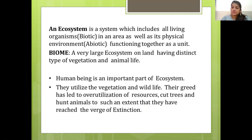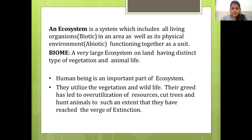An ecosystem is a system that includes all living organisms (biotic) in an area as well as its physical environment (abiotic), functioning together as a unit. A biome is a very large ecosystem on land having a distinct type of vegetation and animal life. Human beings are an important part of the ecosystem — we utilize vegetation and wildlife, but our greed has led to over-utilization of resources, cutting of trees, and hunting of animals to such an extent that they have reached the verge of extinction.